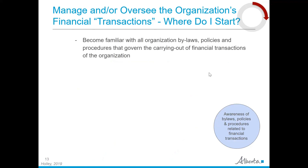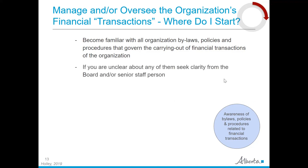One of the first things you need to do is review and become familiar with all organization bylaws, policies, and procedures that govern the carrying out of financial transactions. For example, there might be a board policy related to control of expenditures, which might include things such as who can authorize spending, upper limits before approval is needed, who can sign checks or authorize online banking transactions, and segregation of duties. If you are unclear about any of them, seek clarity from the board or the senior staff person.